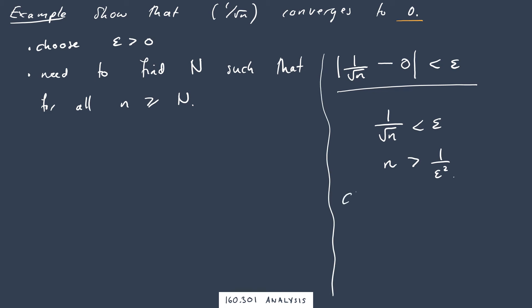So why don't we say choose N to be greater than 1 over epsilon squared. Then what we can say, so choose N such that N is greater than 1 over epsilon squared.